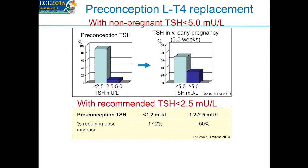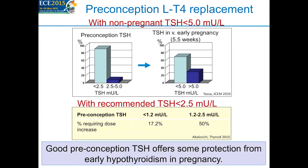Some people go even further: an Argentinian study showed that if the preconception TSH is less than 1.2, only 17.2% of women require a dose increase, whereas this increases to 50% when serum TSH is higher. Good preconception TSH therefore offers some protection from early hypothyroidism in pregnancy.